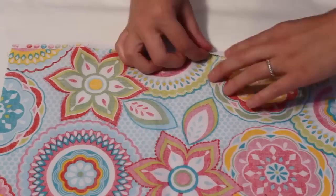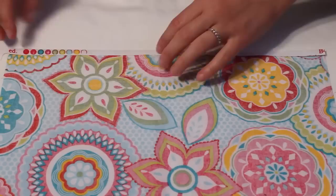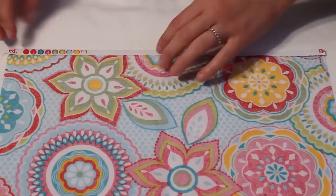Fold one side of the pattern piece over one quarter inch and iron, then another quarter inch and iron. Do this for both short sides and one long side.